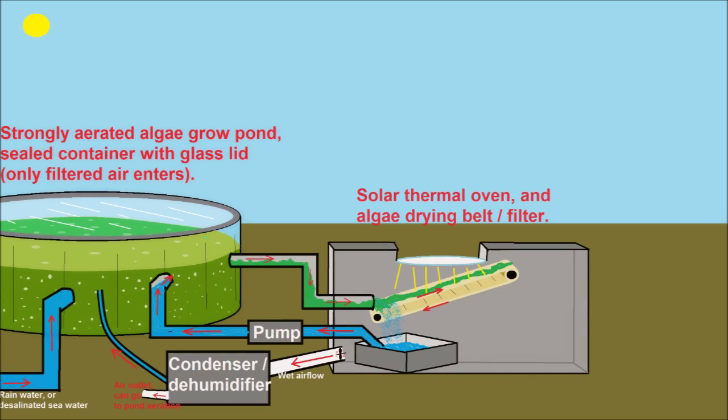The algae pond can get its main water supply from rain or desalinated seawater. The algae pond water flows through a pipe to a filtering conveyor. Algae is caught on the conveyor while water drips through. The water that drips through is pumped back to the pond and the algae is dried in a solar oven as it rides along the conveyor.